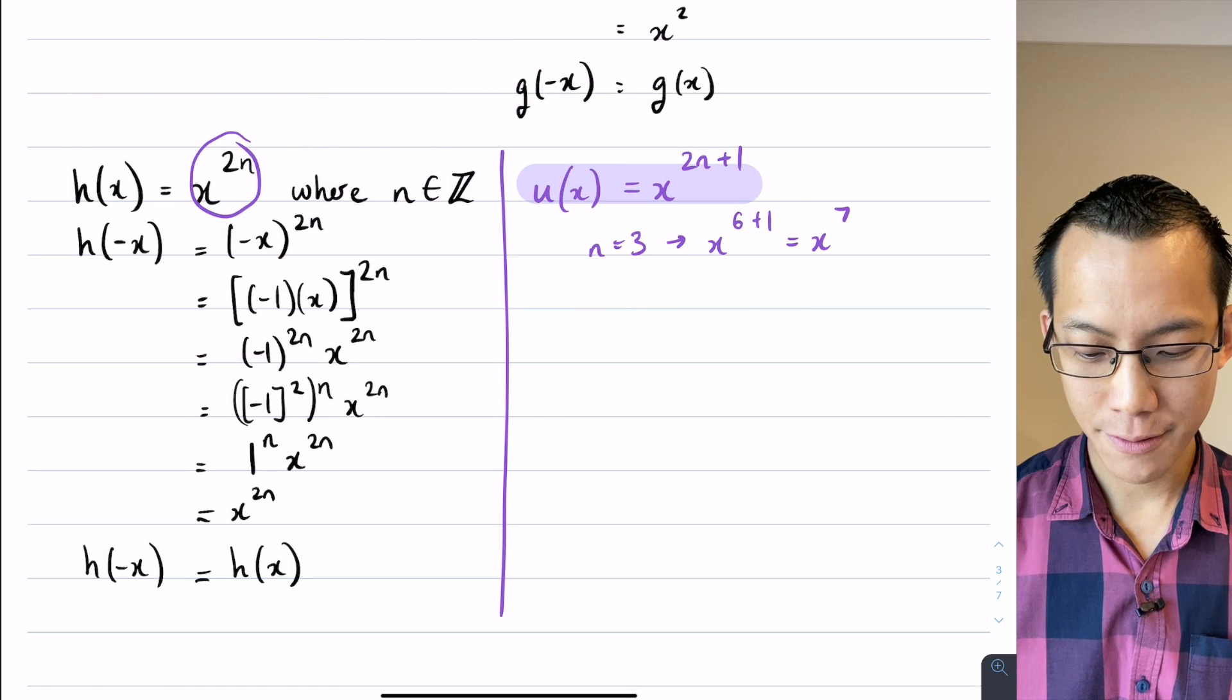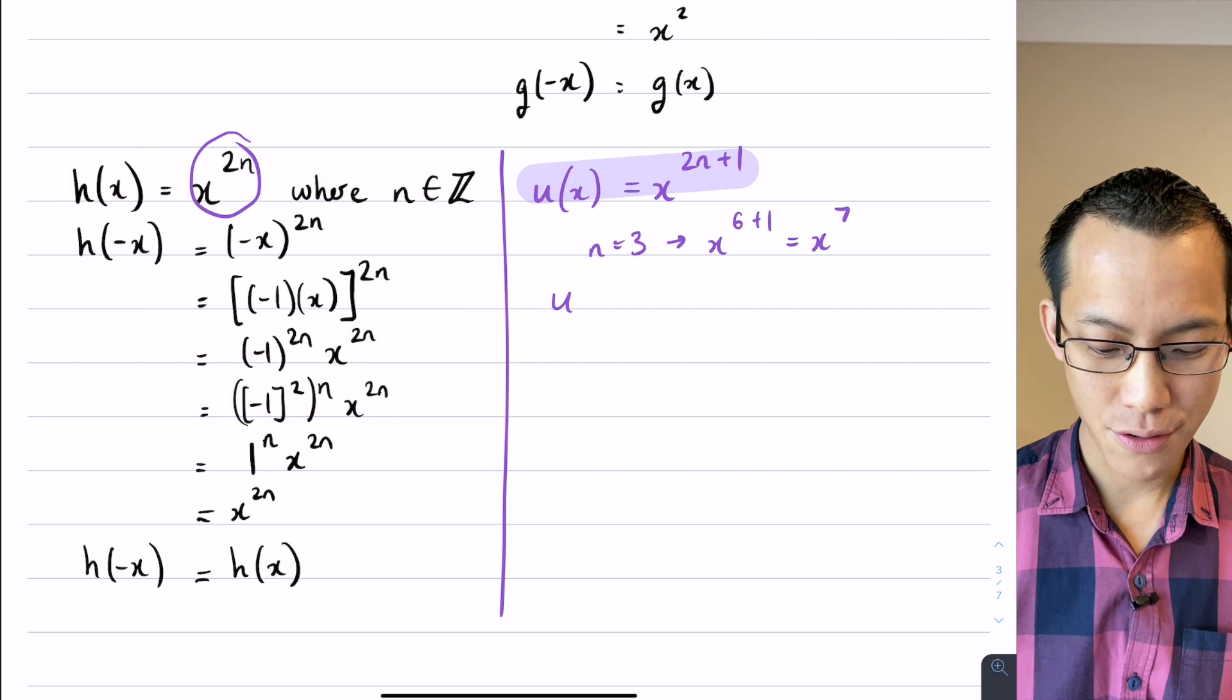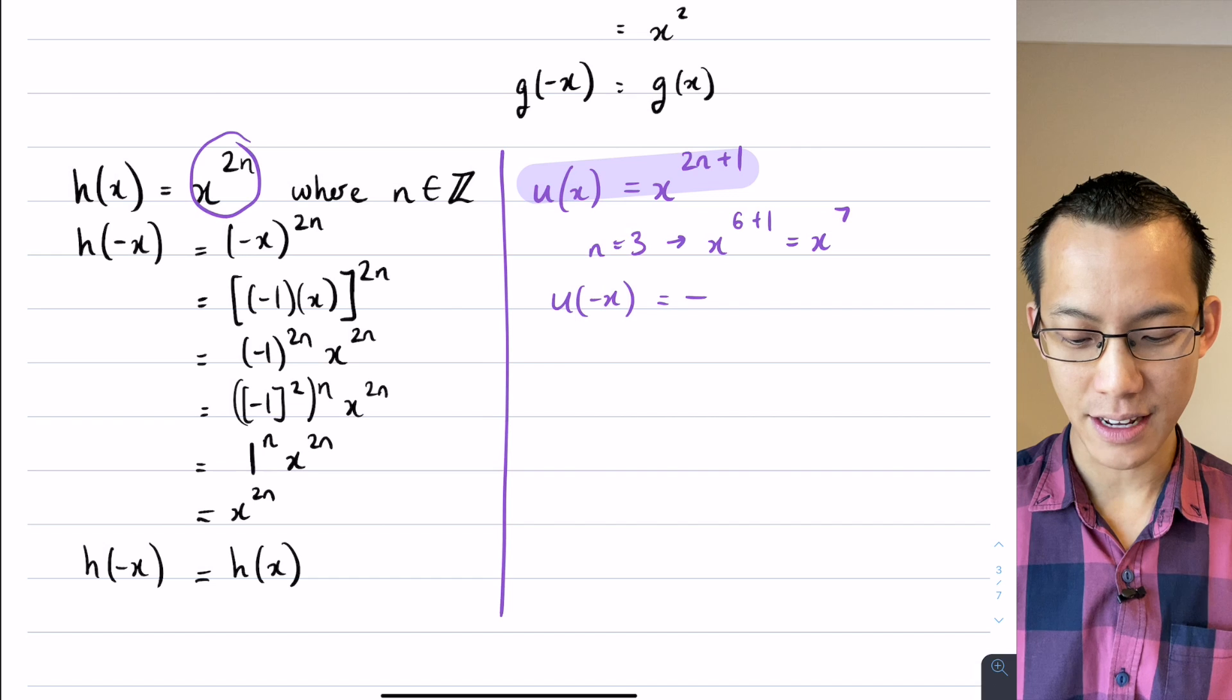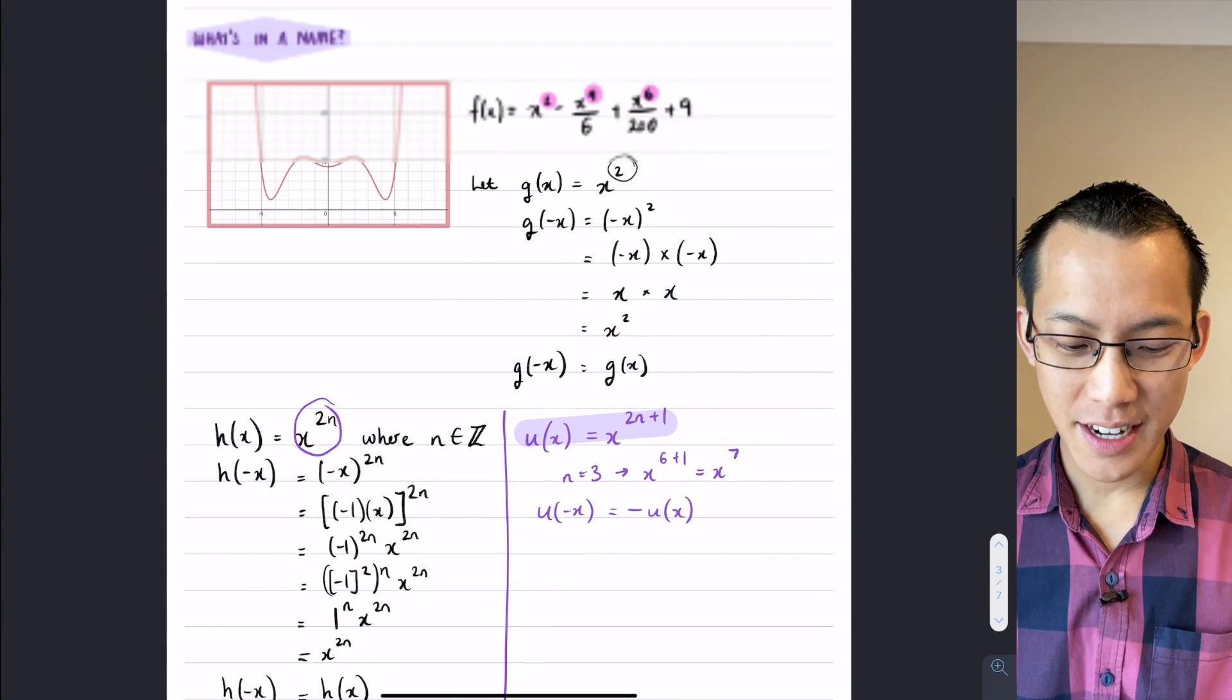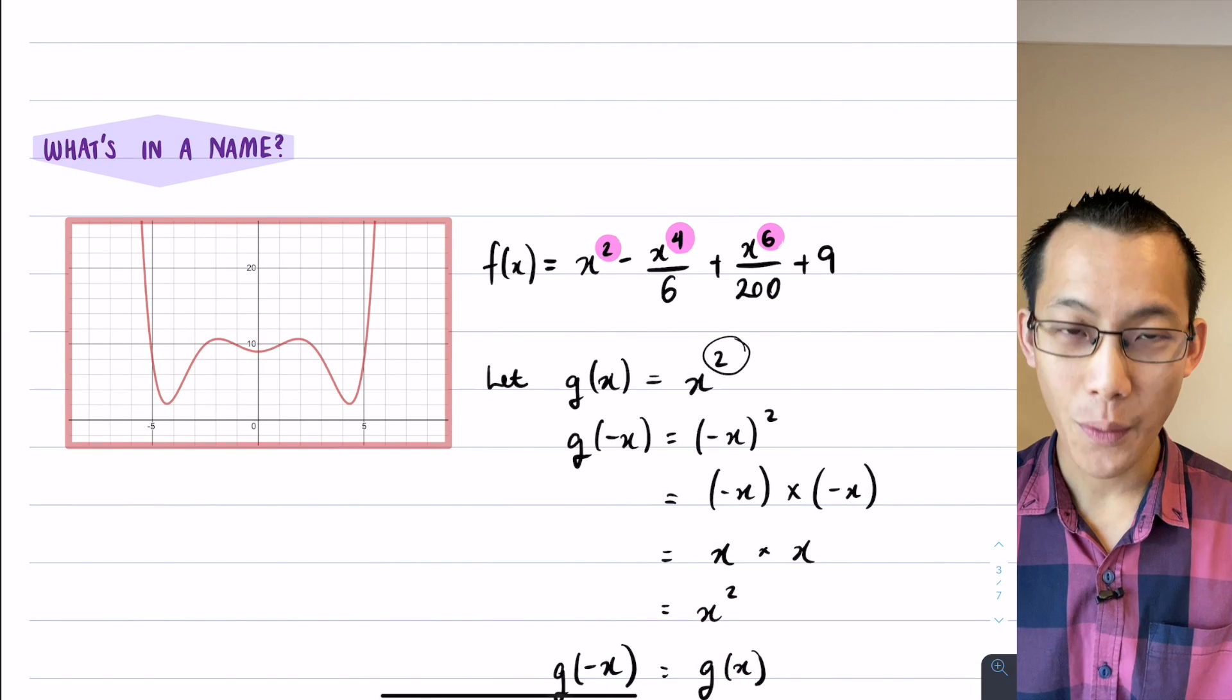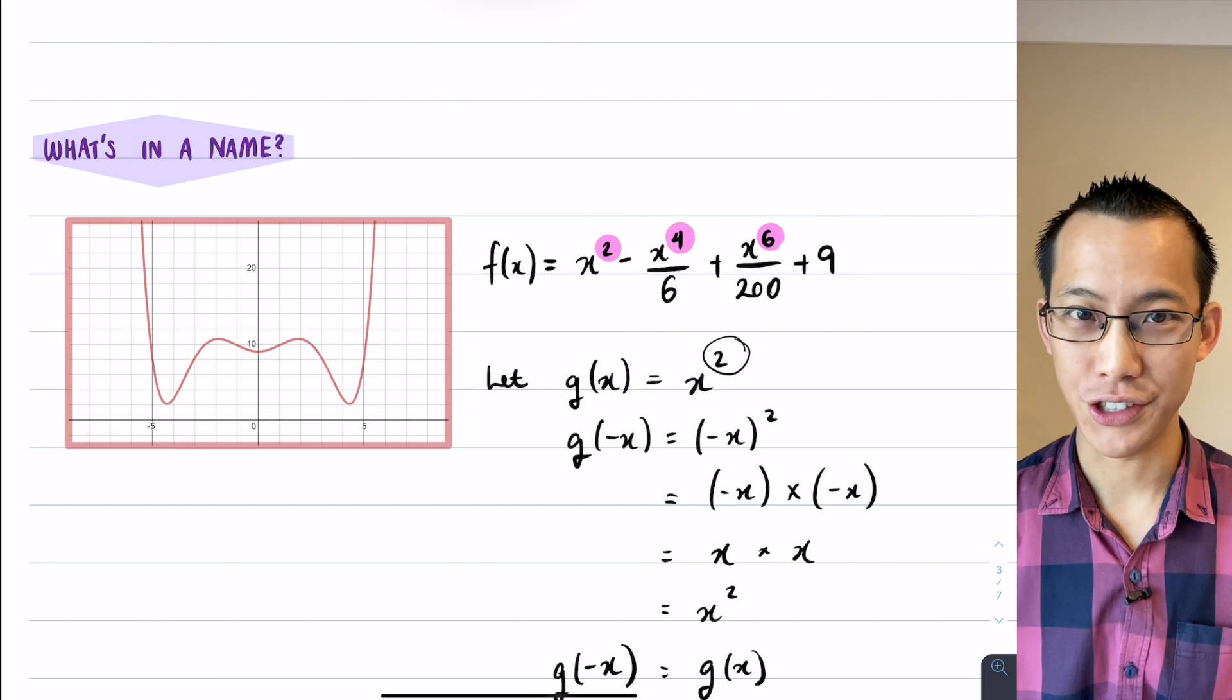So I'll leave it as an exercise for you to have a go at showing that if you start with this guy, there we go, you are always going to get, if you test out u of negative x, you are always going to get negative u of x. Give that a go. So what's in a name? The point is that if you come up with even powers you're going to have an even function and if you come up with odd powers you're going to get an odd function.